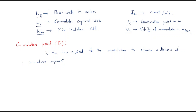Before proceeding, let's recall the key variables: WB is the brush width, WC is the commutator segment width, WM is the mica insulation width, IC is the current per coil, TC is the commutation period in seconds, and V is the velocity of the commutator.